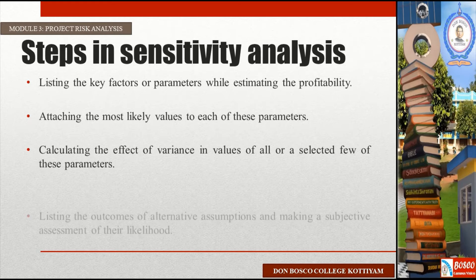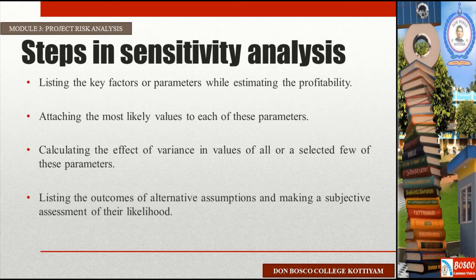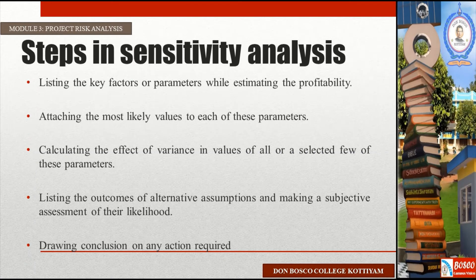Step four: listing the outcomes of alternative assumptions and making a subjective assessment of their likelihood. We change the value of each factor and observe the outcomes. Step five: drawing a conclusion on any action required — we focus on each factor and determine the necessary action.